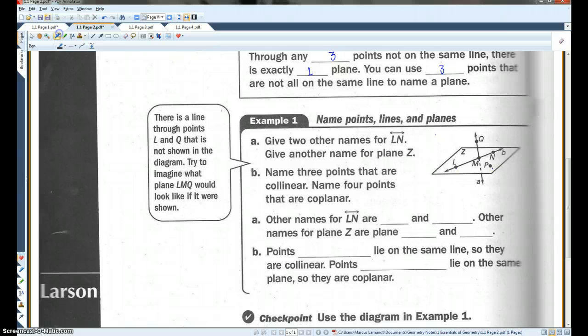All right. Let's do an example. Okay. A says, give two other names for line LN. Give another name for plane Z. Other names for LN would be NL, or you can call it line B. You could also call it line LM, or line MN, or NM, or ML. Those would work, too. Other names for plane Z. You could call it, let's see, LMP, because all three of those points are in that plane. You could call it LNP because all three of those points are in the plane, or PMN. Anything like that would work.